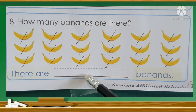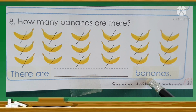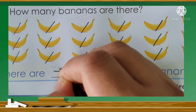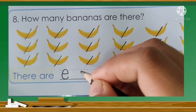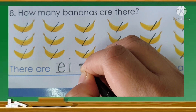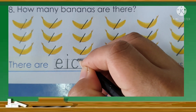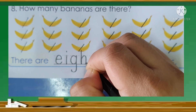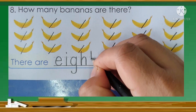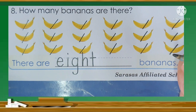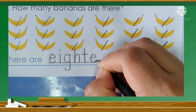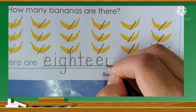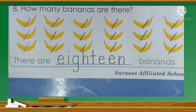There are 18 bananas. Now let's write the word 18: E-I-G-H-T-E-E-N. 18. There are 18 bananas.